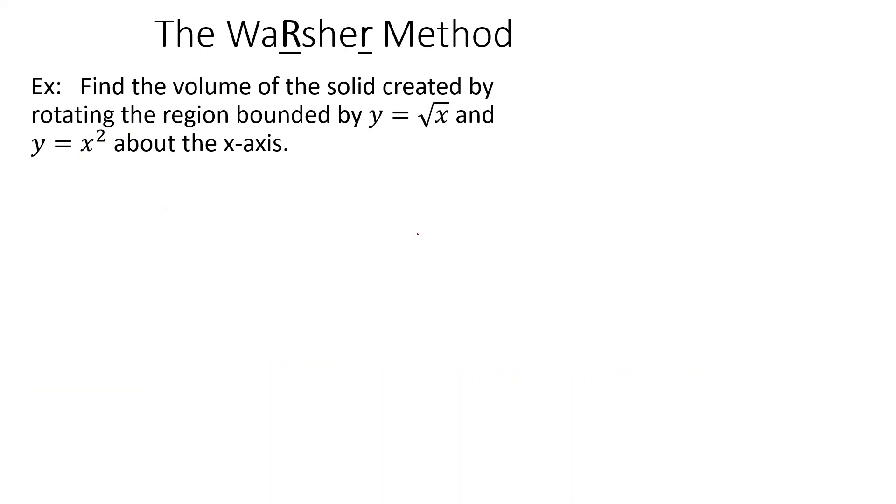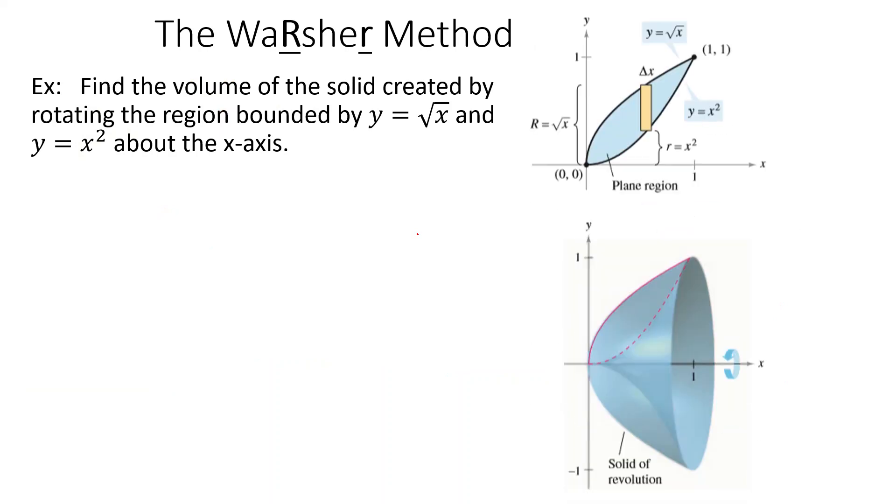All right, so let's take a look at an example. Find the volume of the solid created by rotating the region bounded by y equals the square root of x and y equals x squared about the x-axis. So let's see. We do a little drawing here. Here's the x-squared graph on the bottom. Here's the square root of x on the top. And we're going to rotate that around the x-axis. And we end up making this shape here, if you can picture that in your head.